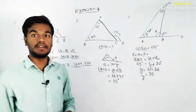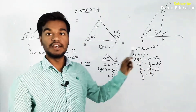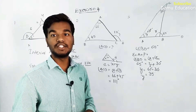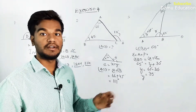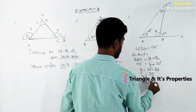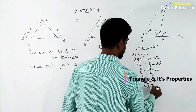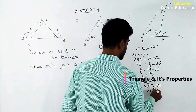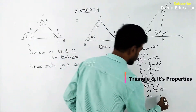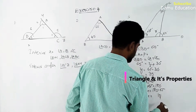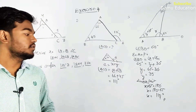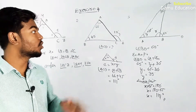To find x, we can use linear pair angles. From linear pair: x plus 65 will be equal to 180 degrees, so x equals 180 minus 65, which gives x equal to 115 degrees.